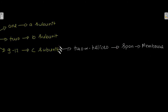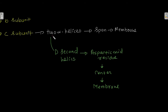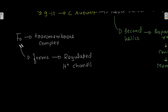Out of the two alpha helices in the C subunit, the second helix contains an aspartic acid residue that lies at the center of the membrane. F0 is a transmembrane complex that forms a regulated H+ (proton) channel.